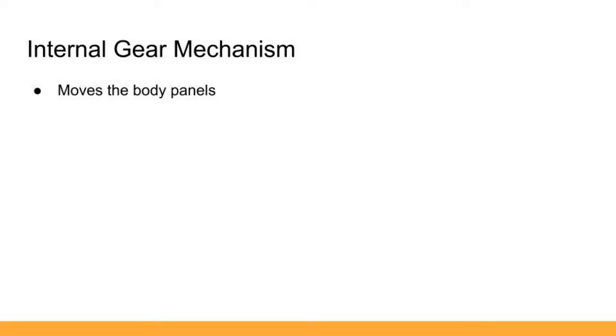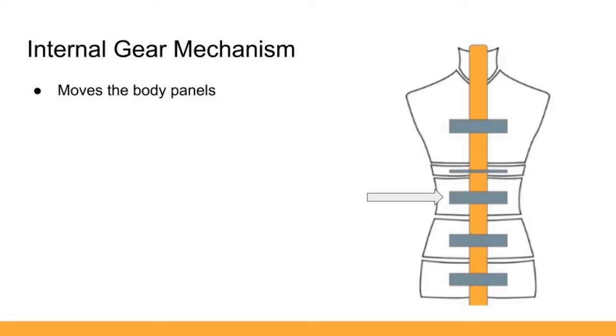Next, we're going to talk about the internal gear mechanism, which is responsible for moving the 24 body panels in the inwards and outwards direction. One assembly is used for one level of the panels, for example, moving all the waist panels out, and it is the same assembly for all other measurements. For the next bit of the presentation, we'll be discussing only one mechanism.